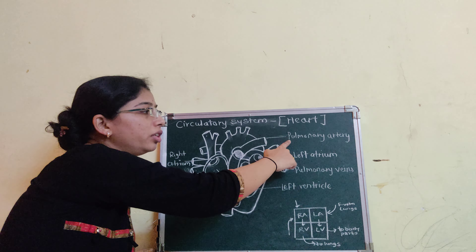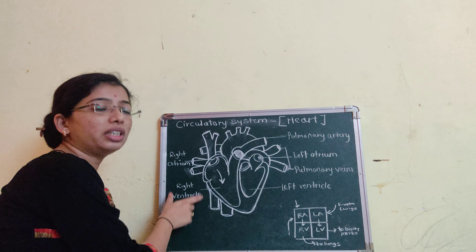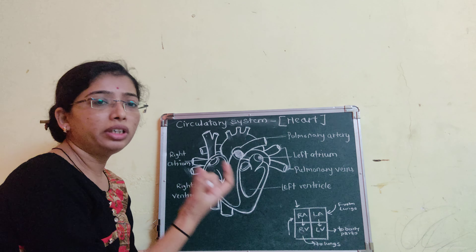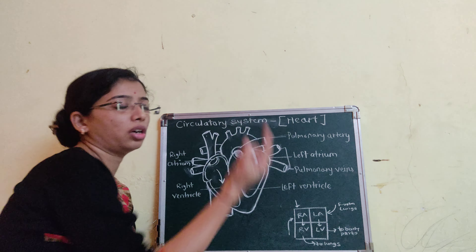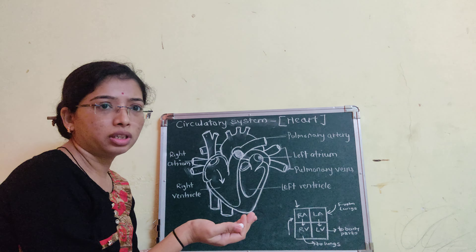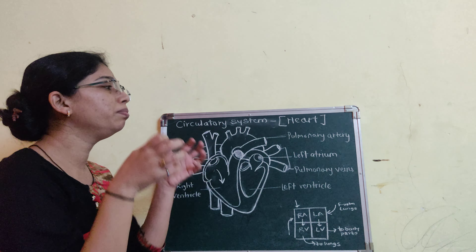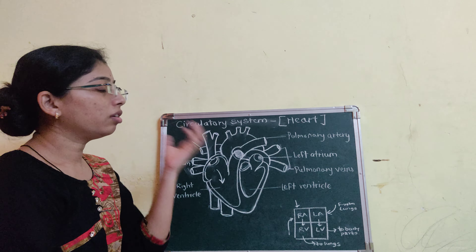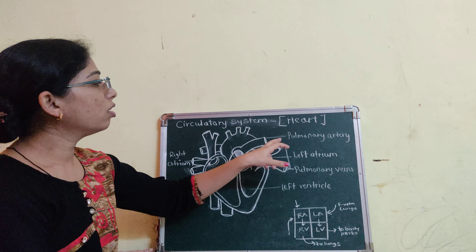Then, the right ventricle is relaxed, but when the right ventricle contracts, it pumps out the de-oxygenated blood through the pulmonary artery to the lungs.